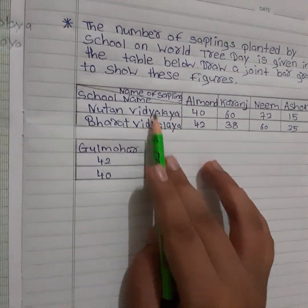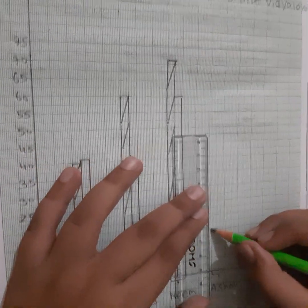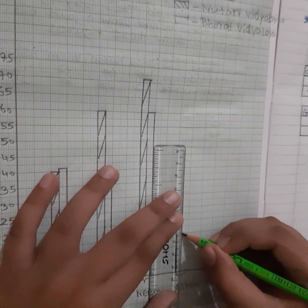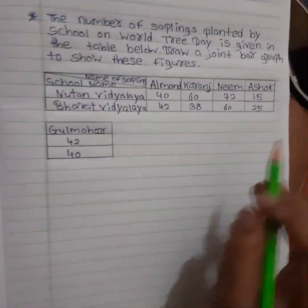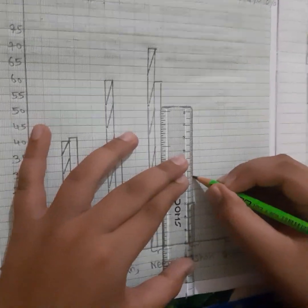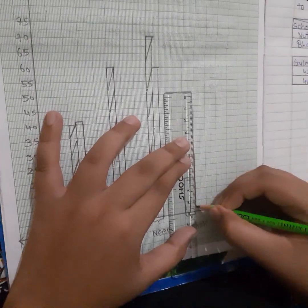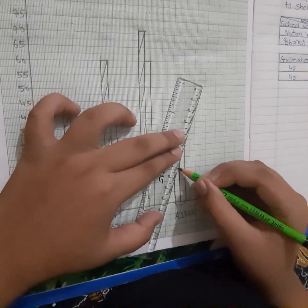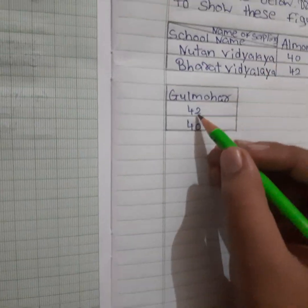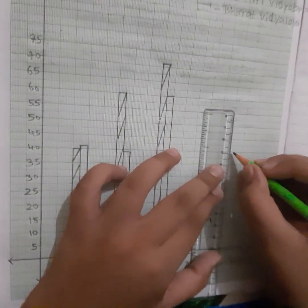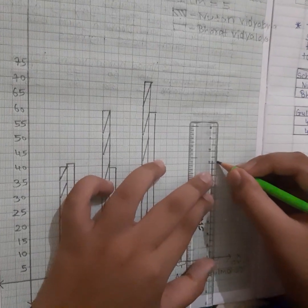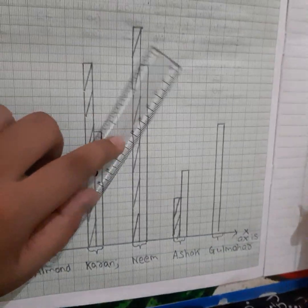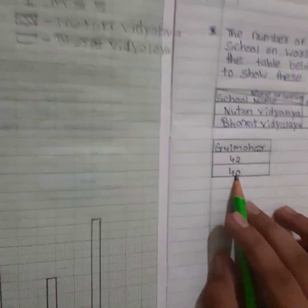Next is Asok: Newton's value is 15, so we draw the bar at 15. Then Bharat's value for Asok is 25, so we draw the bar at 25 and fill in the Newton design. Last is Gulmohar: Newton's value is 42 - that is 40 plus two boxes. Then Bharat's value for Gulmohar is 40, so we draw the bar at 40.